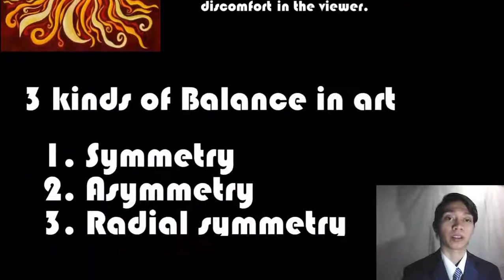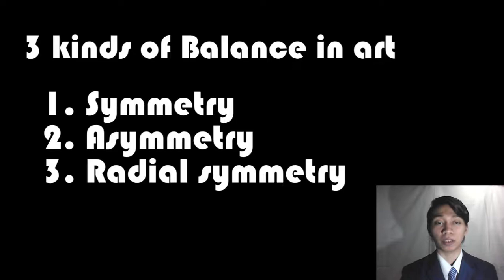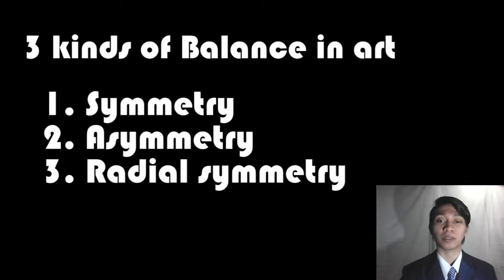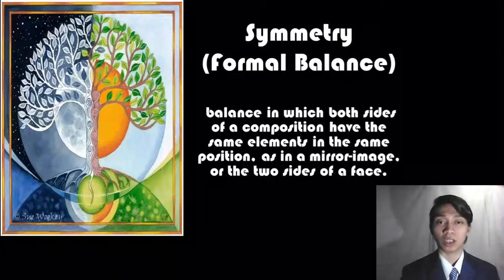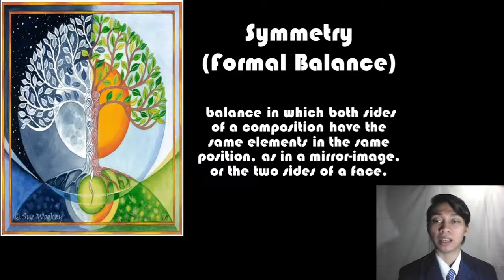We have three kinds of balance in art. First, symmetry — symmetry is balance, ultimate balance. Asymmetry is not in balance. And lastly, radical symmetry, or absolute symmetry in radial form. Symmetry is formal balance where both sides of a composition have the same elements in the same position, like a mirror image or two sides of a face.